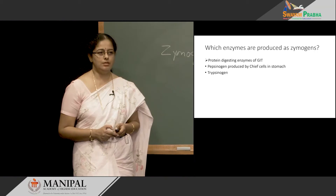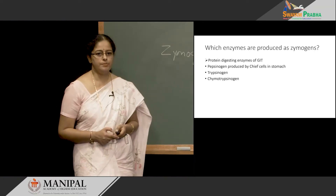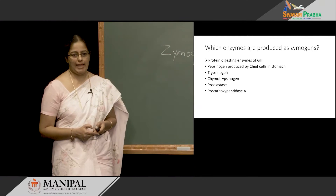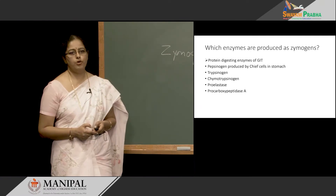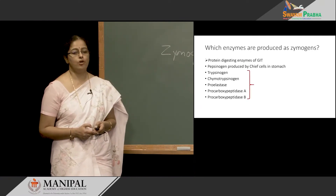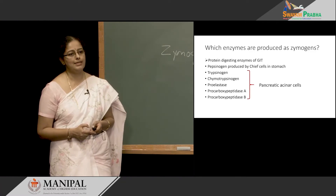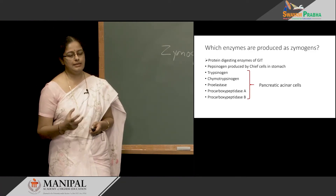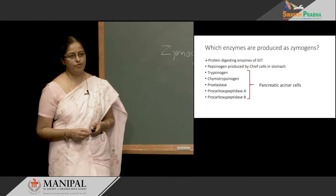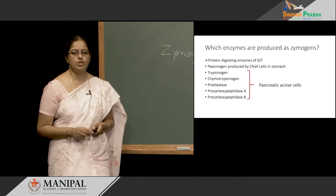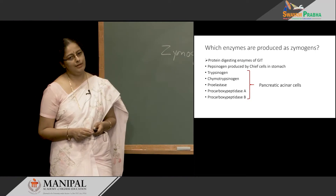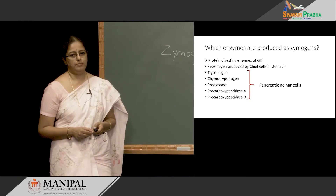We have trypsinogen, chymotrypsinogen, proelastase, procarboxypeptidase A, and procarboxypeptidase B. These are all zymogens produced in the pancreatic acinar cells. They are synthesized and stored in the pancreas in their zymogen forms. Once they reach the duodenum in presence of food, they get activated to their active enzyme form.